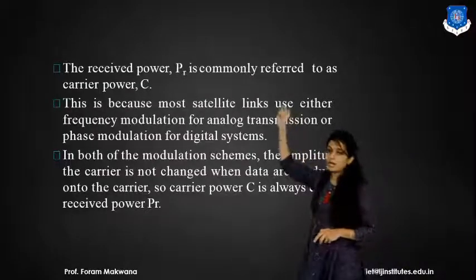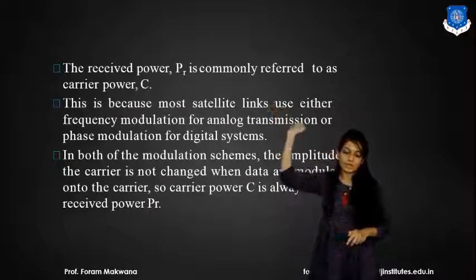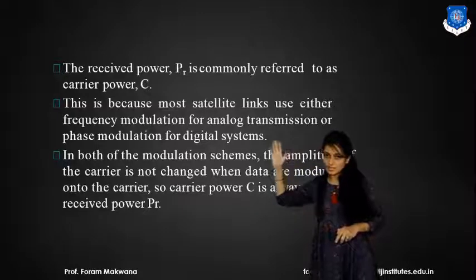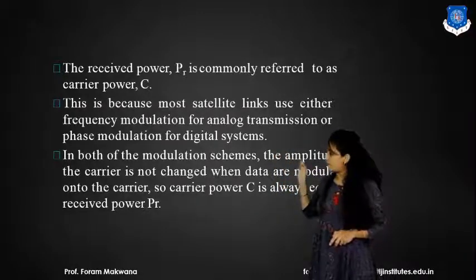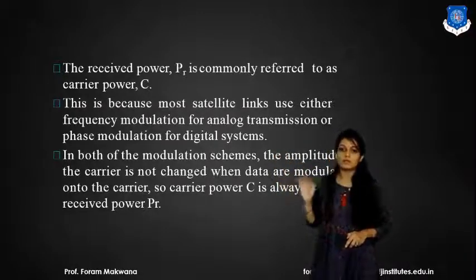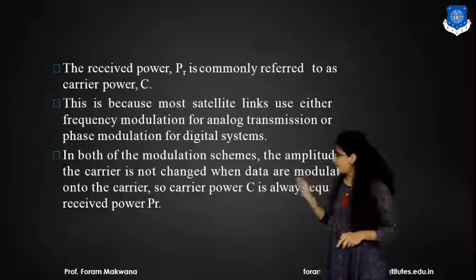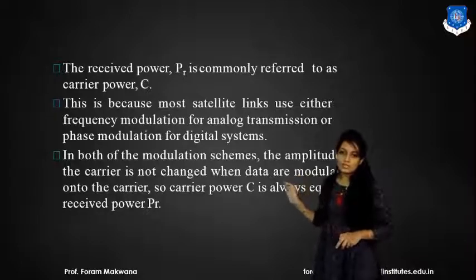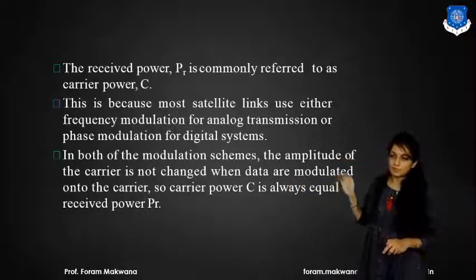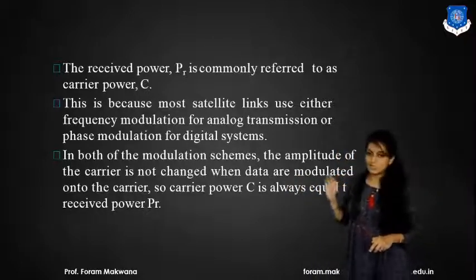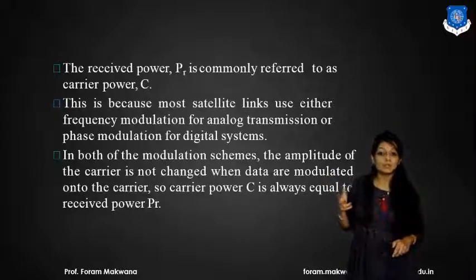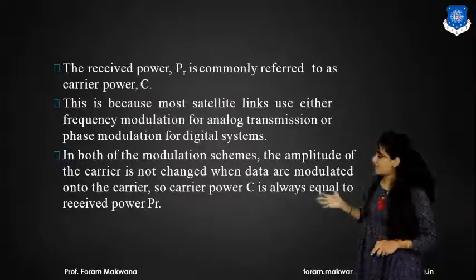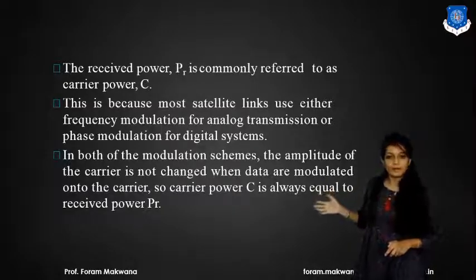So the received power PR is commonly equated to the RF carrier power. Why? Because most satellite links use frequency modulation for analog transmission and phase modulation for digital transmission. In both modulation schemes, the amplitude of the carrier does not change when data is modulated onto the carrier. So my carrier power is equal to the received power.